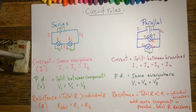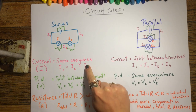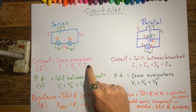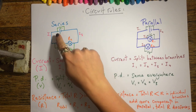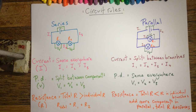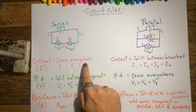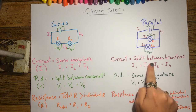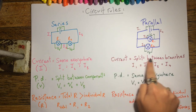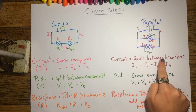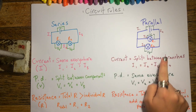In terms of actually remembering this, as long as you can remember that current is the same everywhere for a series circuit, you should be able to work out the rest. Because in a parallel circuit for current, it's the opposite of what it was in a series circuit.